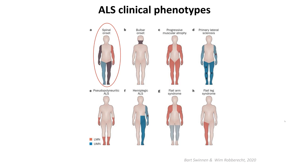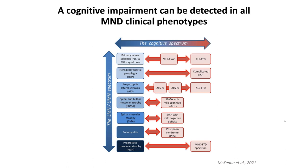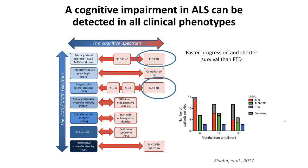ALS is a spectrum of different clinical phenotypes. The most frequent is the spinal onset, with the disease starting from the upper or lower limbs. ALS is part of a spectrum of motor neuron disorders, and cognitive impairment can be detected in all the clinical phenotypes of the spectrum. A clear pattern of FTD can be found in ALS and particularly in PLS. If ALS is associated with FTD, the disease is faster and has a shorter survival, as demonstrated in different studies.